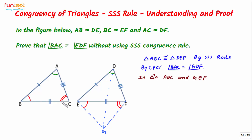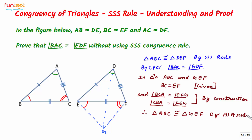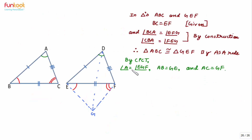In triangles ABC and GEF, we have BC is equal to EF (given), angle BCA is equal to angle EFG, and angle CBA is equal to angle FEG by construction. Therefore, triangle ABC is congruent to triangle GEF by the ASA rule of congruency. This implies by CPCT that angle A is equal to angle EGF.